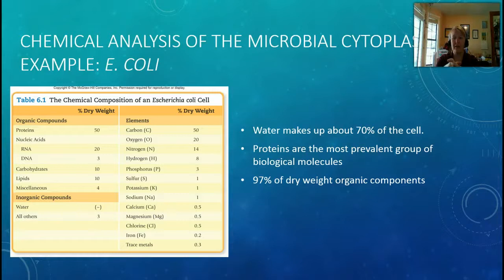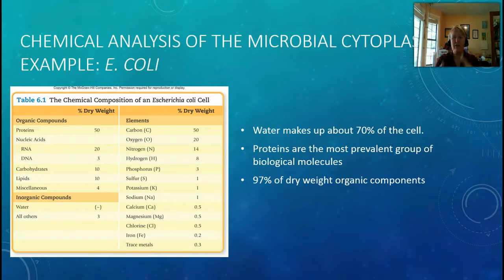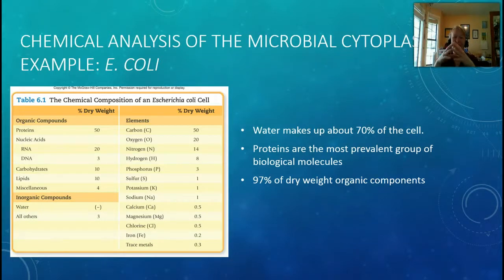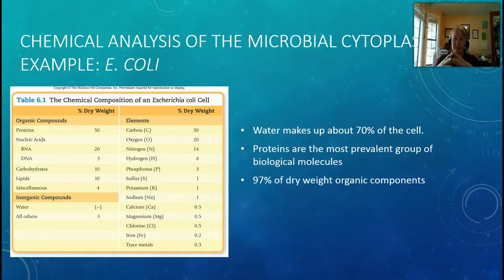Nucleic acids are the next biggest component at 20%, so proteins make up half the dry weight. There are also six main elements needed by the cell: carbon, oxygen, nitrogen, hydrogen, phosphorus, and sulfur. Those are the most important elements; the rest are not as important. The big takeaways from this slide are that water is the biggest component, followed by proteins, and there are a handful of standard elements the cell requires.